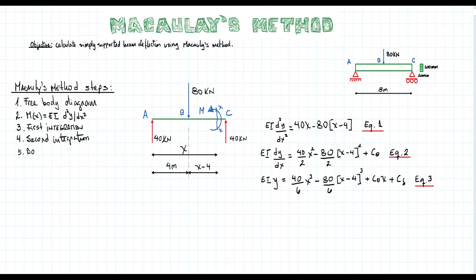Step number 5, find all displacements and rotations. You can find these from constraints or specific conditions resulting from the type of supports used. In our simply supported beam, the boundary conditions are as follows.